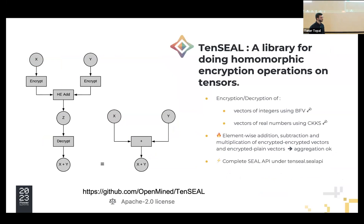To implement homomorphic encryption, we used the library created by OpenMind. This library is based on the SEAL API, the most widely used homomorphic encryption API. This library encrypts and decrypts a vector of integers using the BFV schema, and a vector of real numbers using the CKKS schema. The encrypted objects support addition, subtraction, and multiplication, so it's possible to aggregate the results with the server.